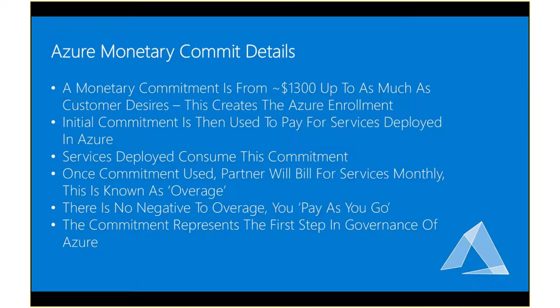So what are some of the details around a commitment, or an Azure Monetary Commitment — you'll also hear this referred to as an AMC? The first thing is that you can start with a very low amount, approximately $1,300, up to as much as you want. This basically creates an account with Microsoft with funds available to spend against Azure resources. Once you make this Azure Monetary Commitment, this is what actually creates your Azure enrollment. The initial commitment is then used to pay for services deployed — virtual machines, storage, any of the services offered by Azure will start consuming against the amount you committed upfront.